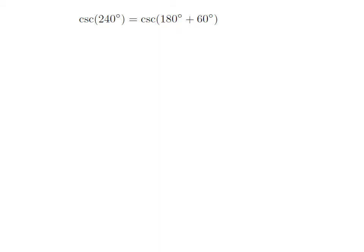As 240 degrees is equal to 180 degrees plus 60 degrees, so cosecant of 240 degrees is equal to cosecant of 180 degrees plus 60 degrees.